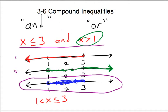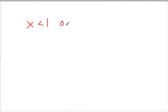Let's take a look at what an OR statement might look like. So let's say I had x is less than 1 or x is greater than 2.